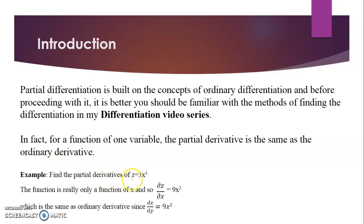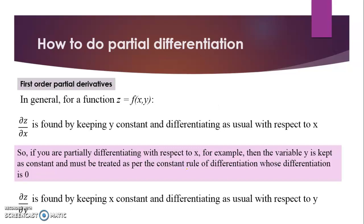For example, if you have to find the partial derivative of Z equals 3X³, since there is just one independent variable X, the partial differentiation of Z with respect to X uses the power rule: 3 × 3 × X^(3−1) = 9X². This is just the same as the ordinary derivative — only the symbol changes, but the result is identical when the function has just one variable.